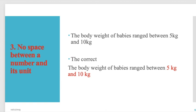Number three is no space between a number and its unit. The body weight of babies ranged between 5kg and 10kg. You can see there's no space between the 5 and the kg. The correct way is to have one space between the number 5 and kg.